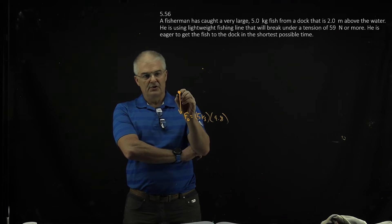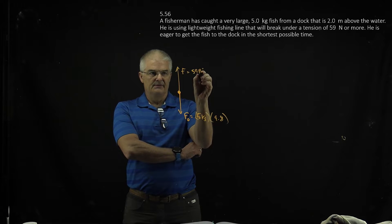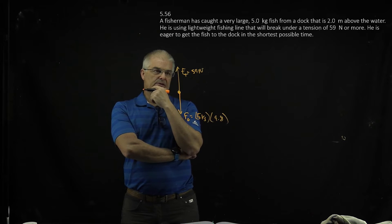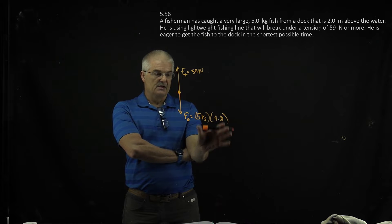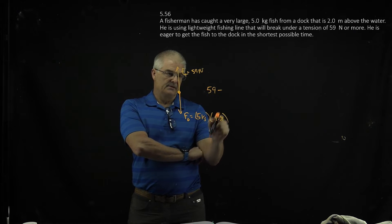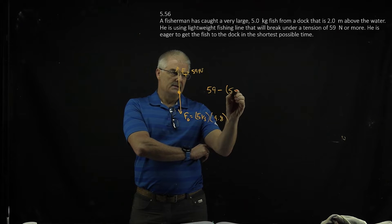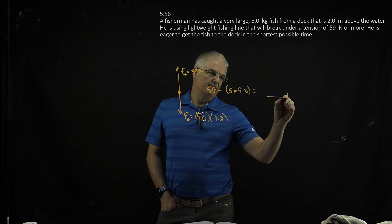But also we have a force, the maximum force going upward, of 59 newtons. And if you break this, the tensional force, what we need to do is figure out what's the net force. So it's going to be 59 minus whatever this is, 5 times 9.8. And that's going to give you a certain number of newtons.